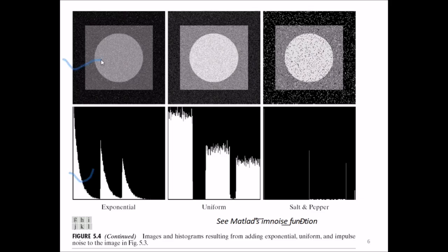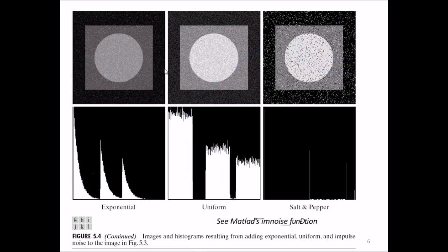Continuing, we also see examples with exponential noise, uniform noise, and most commonly, salt and pepper noise — also known as impulse noise. For uniform noise, you can see the uniform histogram as shown earlier.